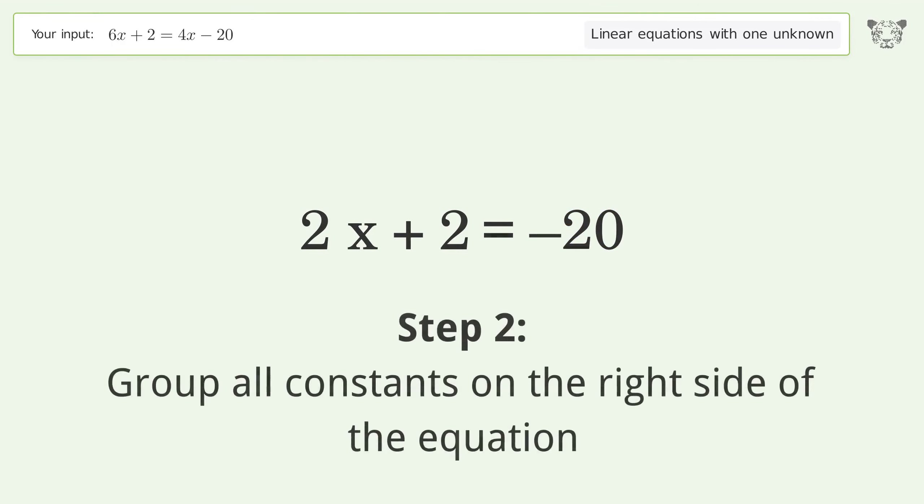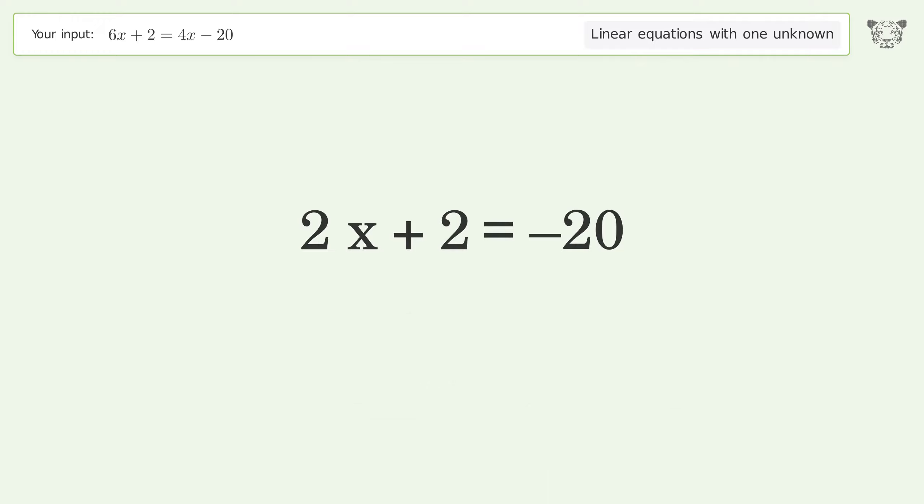Step 2: Group all constants on the right side of the equation. Subtract 2 from both sides. Simplify the arithmetic.